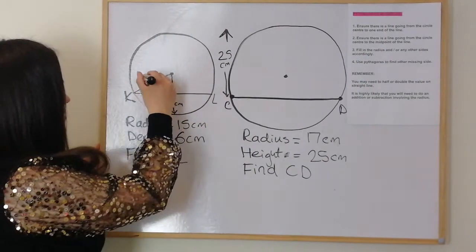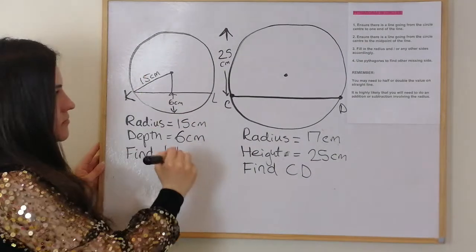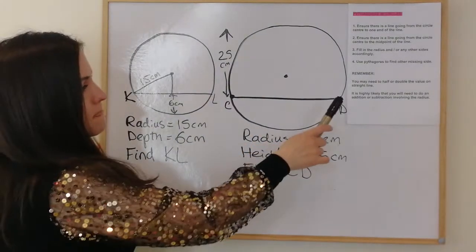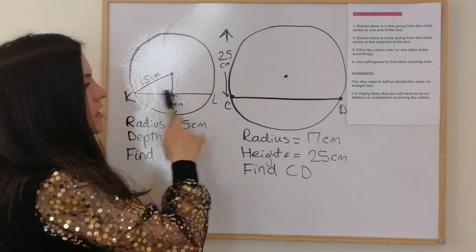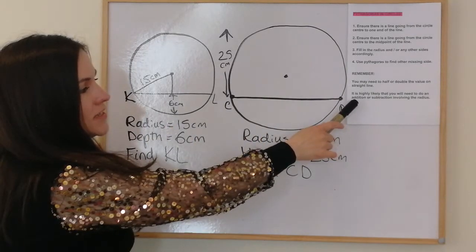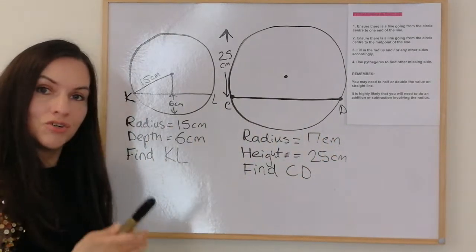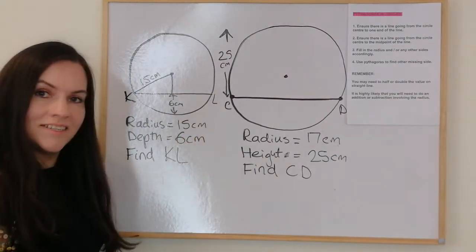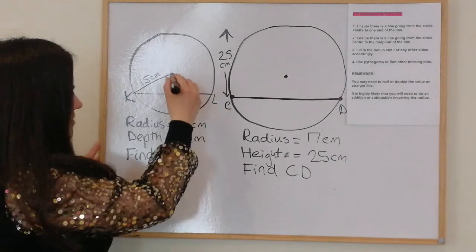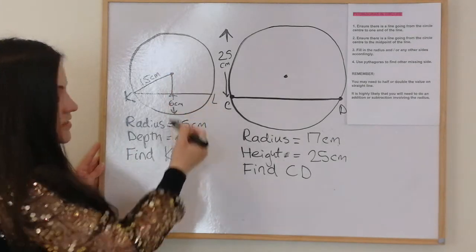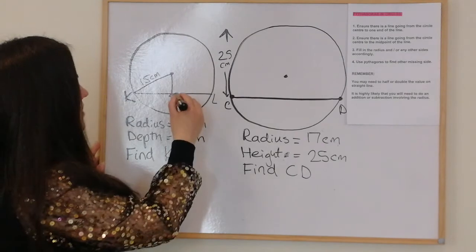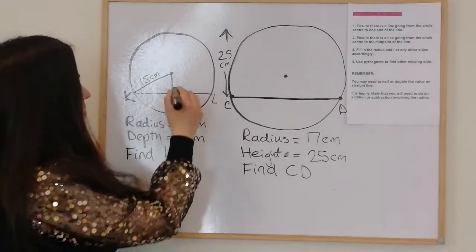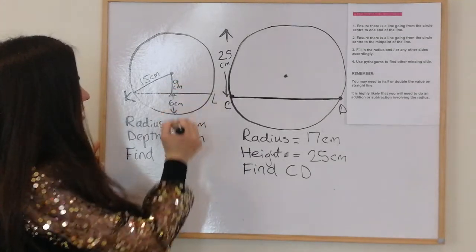To work out the other sides, we may need to half or double the value on the straight line, and it's highly likely we'll need an addition or subtraction involving the radius. We know the radius is 15 and this part is 6. The length from here to here is 15 and the length from here to here is 6, so 15 minus 6 gives us the length of this side — that's 9.